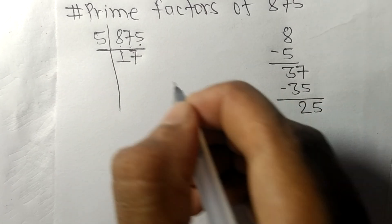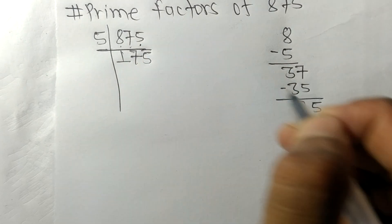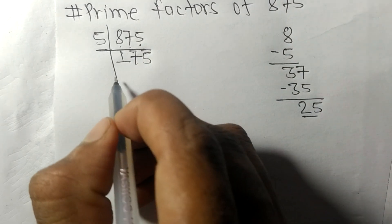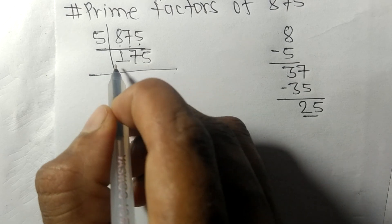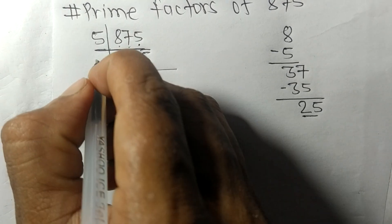And this 5, 25. 5 times 5 equals 25. Again it contains 5 at last, so it is exactly divisible by 5.